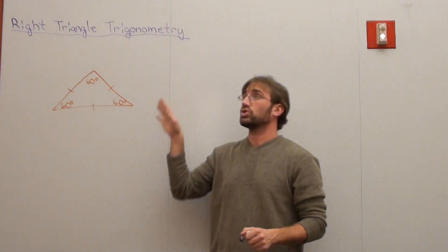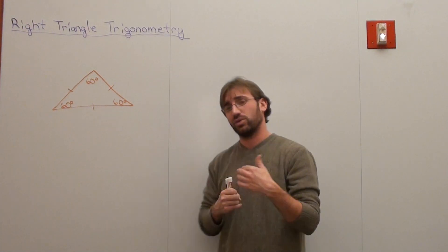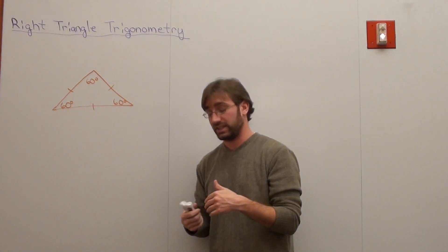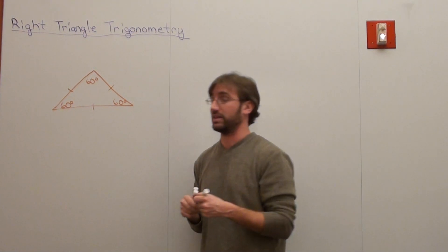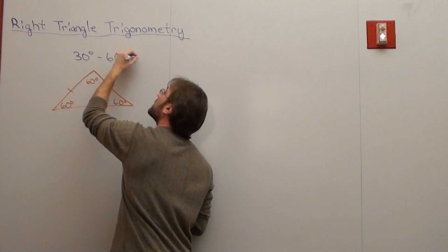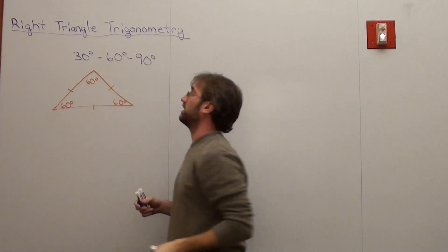Hello again. We're doing right triangle trigonometry. What we did was a 45-45-90 triangle. Well, now what we're going to do is a 30-60-90 triangle. So let me go ahead and write that down. We're going to be working with a 30-60-90 triangle.